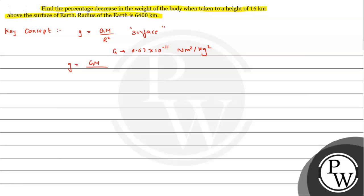If we go above the surface, the distance becomes (R + h), so g becomes GM/(R + h)². A new case arises when R is much much greater than h. In that situation, we can write g_h = GM/R² × R²/(R + h)², which simplifies to g_h = g/(1 + h/R)².